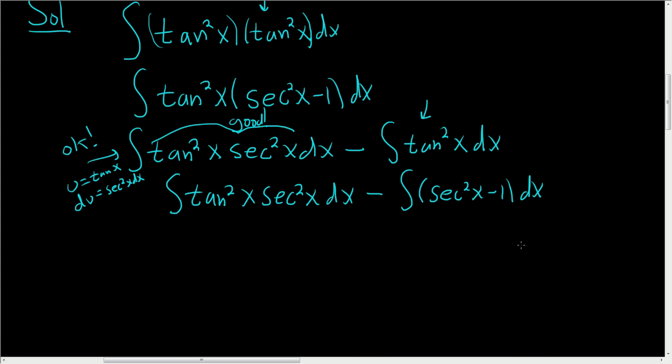Writing the first one again, we get tan squared x secant squared x dx. And then here we end up with minus secant squared x dx plus dx, because we have a negative and a negative, so we get a positive. All right, now let's go ahead and make the substitution.